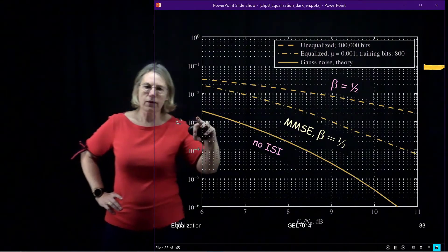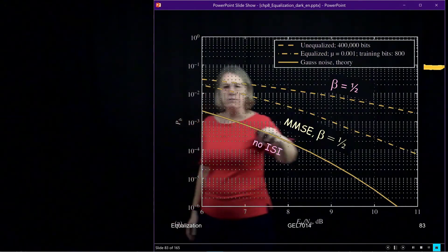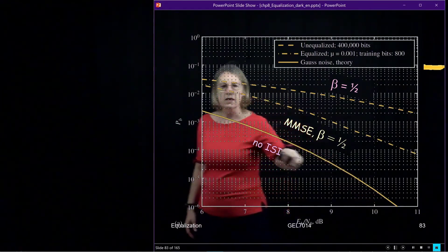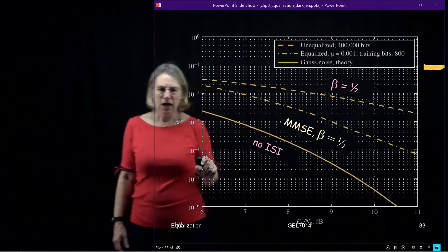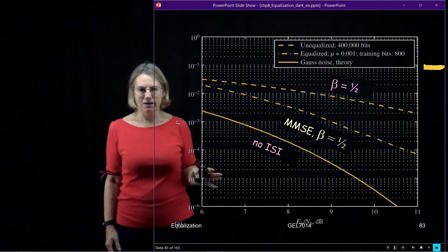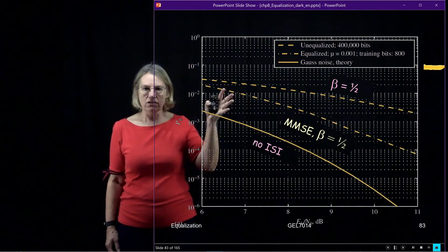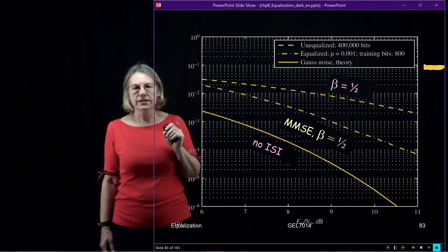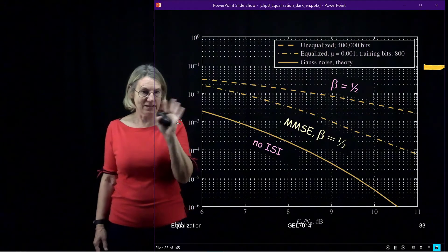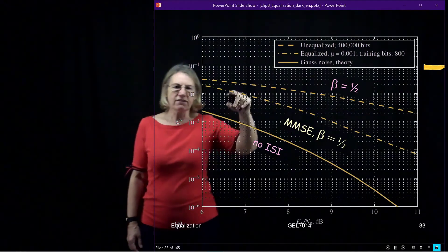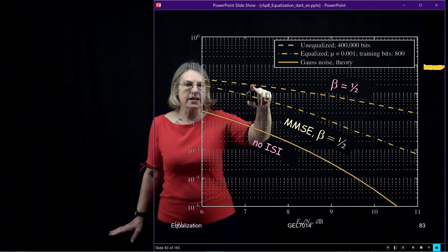And so we first put in a reference curve and this is the theoretical curve for a signal, I think this is BPSK, where we have no ISI. So it's not that channel with the reflection, it's just the channel with only the main path, nothing else.